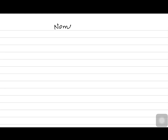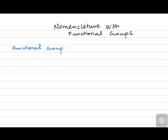Now let's explore rule number six: nomenclature with functional groups. A functional group is an atom — or a group of atoms — that affects the properties of the organic compound.